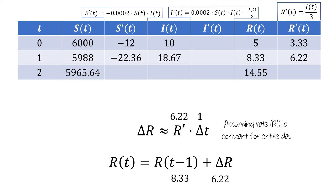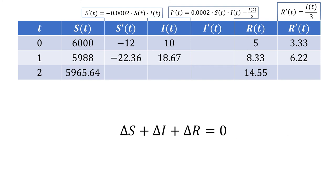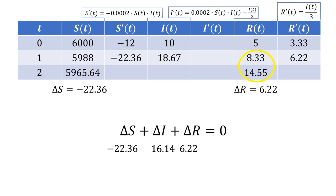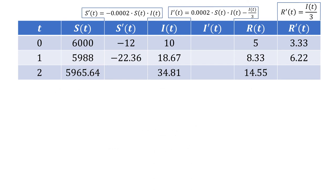Let's compute the number of infected individuals at t equals 2. Recall that the total change in the three groups has to equal zero. There are 22.36 fewer susceptible at t=2 than at t=1, and there are 6.22 more removed individuals. Combining these, there needs to be an additional 16.14 infected people at t=2 than at t=1, which means there are 34.81 infected individuals at t equals 2. So now we've seen how to use Euler's method to compute the number of individuals in each group for the SIR model.